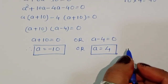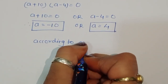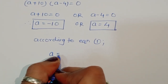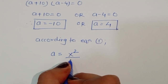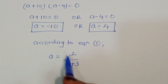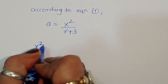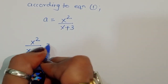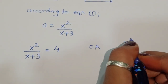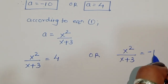We got the values of a, but according to equation 1, a = x²/(x+3). So substituting back: x²/(x+3) = 4, or x²/(x+3) = −10. We have to solve these two equations.